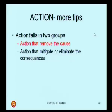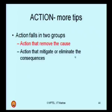Action column generally falls in two groups: action that removes the cause, and action that mitigates or eliminates the consequence. Give priority to actions which attempt to remove the cause, rather than those which mitigate or reduce the consequences — because the consequence is the occurrence of any accident, while the cause is the root reason for that occurrence. Try to address actions related to the cause rather than the consequence in general. The first type is preferred, but not always possible.